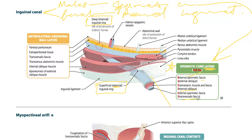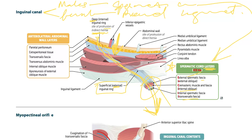One important point: the deep inguinal ring is the site of protrusion for indirect hernia. The indirect hernia goes through the full path of the spermatic cord and comes out of the superficial inguinal ring. The direct inguinal hernia, by contrast, protrudes directly from the abdomen at a weakness of the abdominal wall.